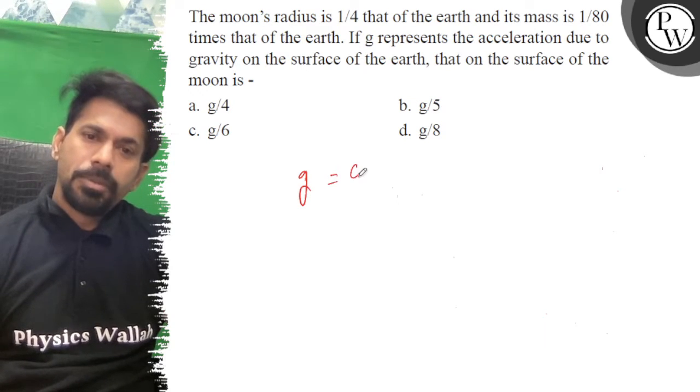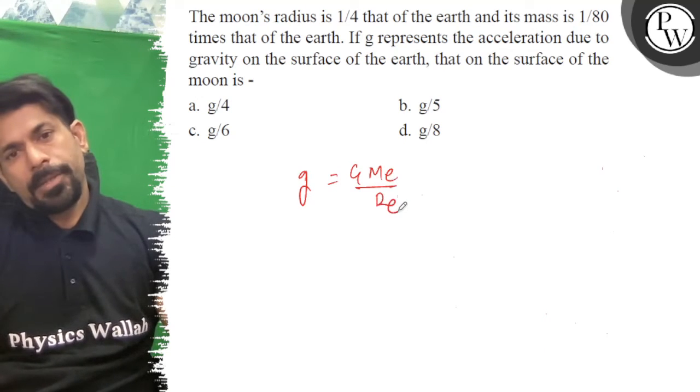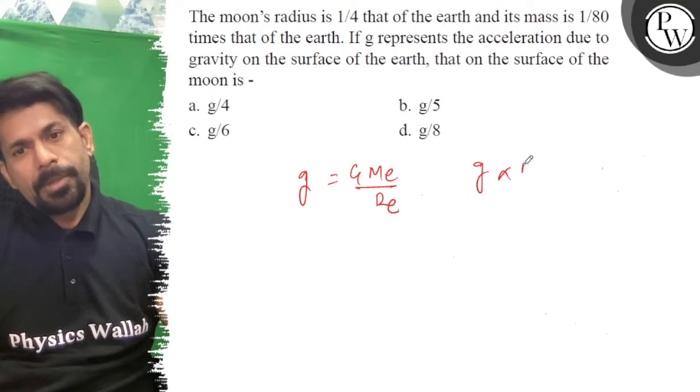g is equal to G times m_e upon r_e squared. Then g is proportional to m by r square.